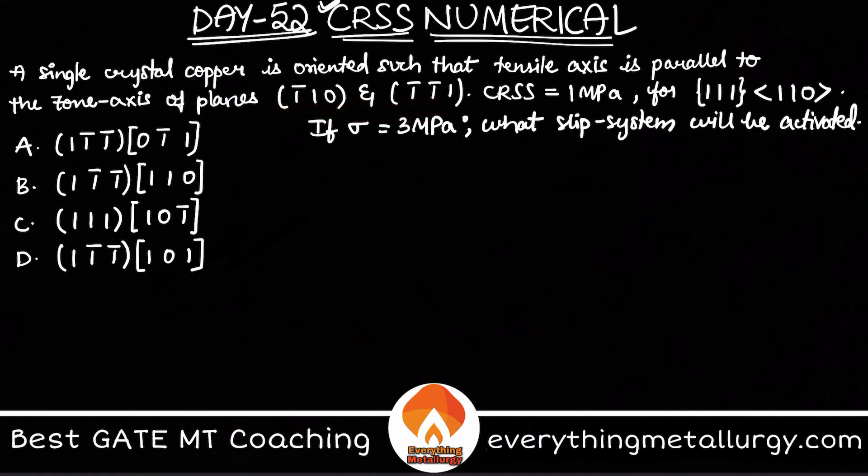Let's find that zone axis. The zone axis [uvw] will be equal to the cross product of the two planes that we have. You can easily do the cross product using this determinant.